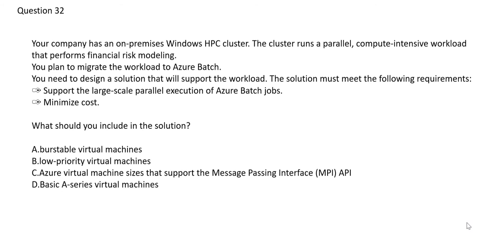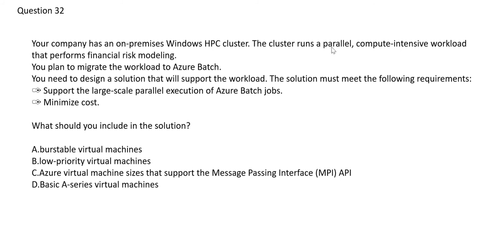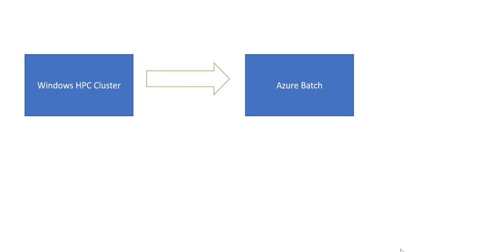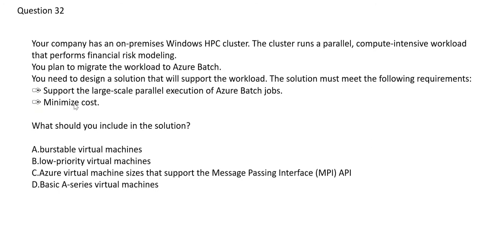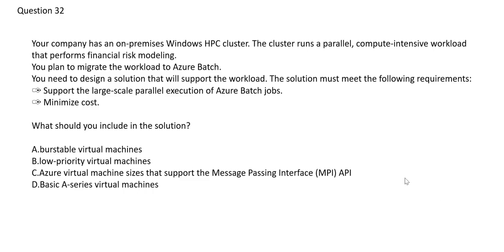The next question: you have on-premises HPC clusters that run parallel, compute-intensive workloads, and you want to move them to Azure Batch. You need to choose a VM type that meets two requirements: cost and large-scale parallel execution. Looking at Option A — Burstable virtual machines — these are for workloads that do not need full CPU performance continuously. That is not our use case, since parallel compute must be continuous, so Option A is ruled out.